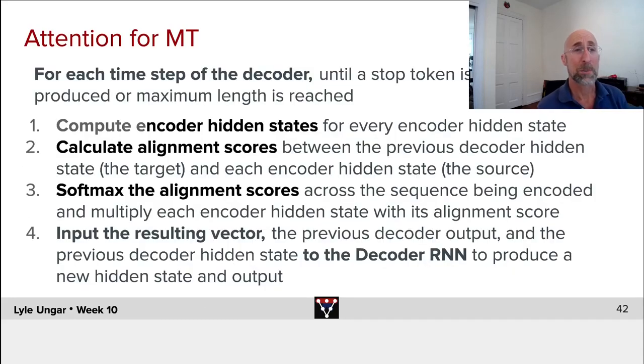So let me walk through that once again in words. If we're doing machine translation for each step of the decoder, as we decode until we get a stop, we compute the encoder hidden states for every encoder hidden state, that's all the words in the source, we compute the alignment scores between the previous decoder hidden state.